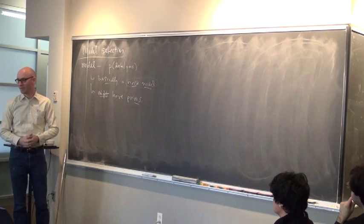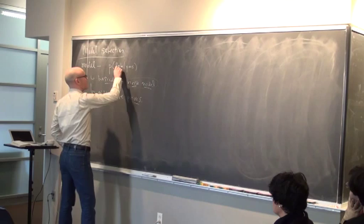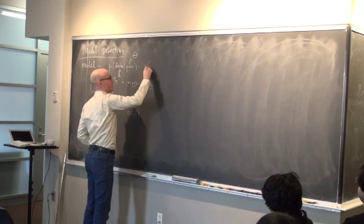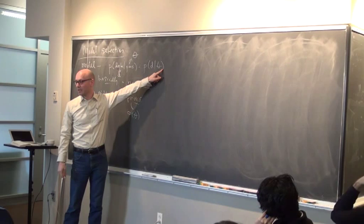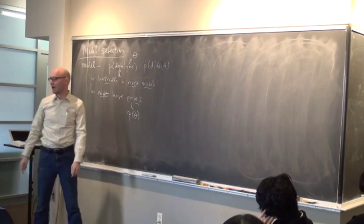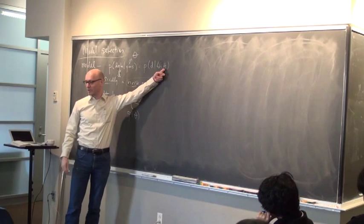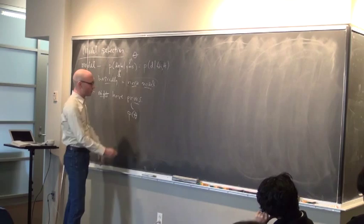For terminology, I'll call the data D and the parameters theta. The prior would be P of theta, and the likelihood is P of D given theta. Of course, the probability of the data is never conditioned just on the parameters — it's also conditioned on the model itself, which I'll call H. So you might have P of D given theta A and HA. We're about to choose among models — so the model hypothesis H goes in there, and the coefficients go in as parameters.